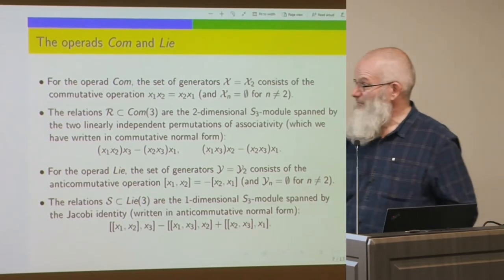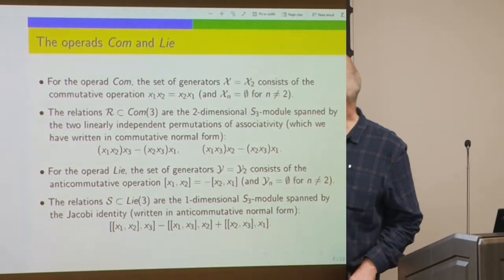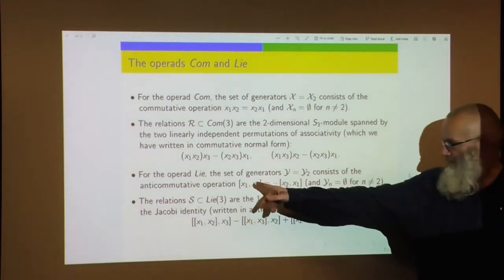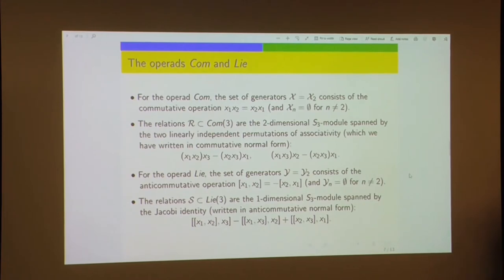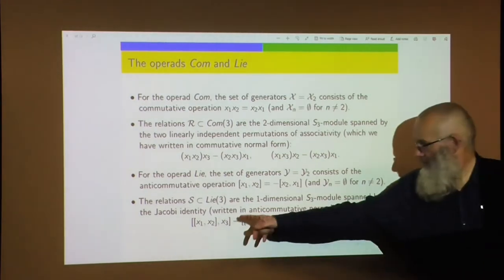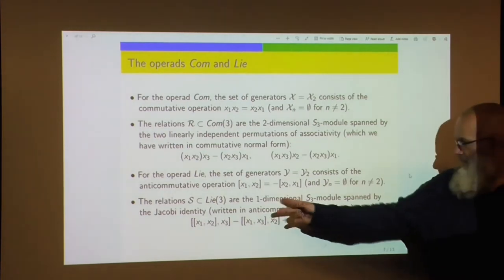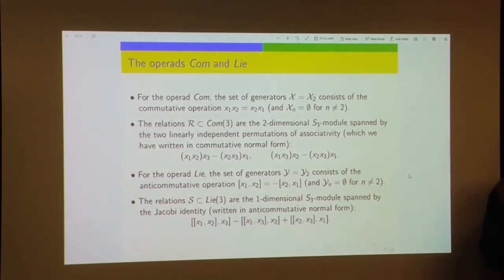For the operad LEE, we have a single anti-commutative binary operation satisfying the Jacobi identity in arity 3. That Jacobi relation spans the one-dimensional S_3 module, which is the sign module. We were interested in finding all distributive laws between these two operads — Poisson algebras are the most familiar example, and we wanted to classify all examples.